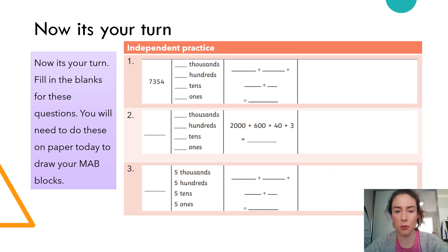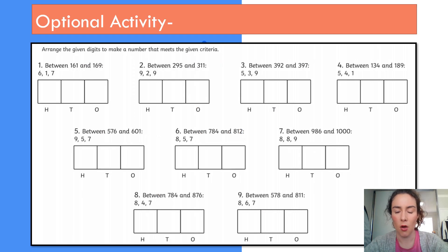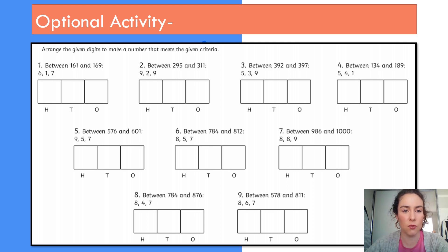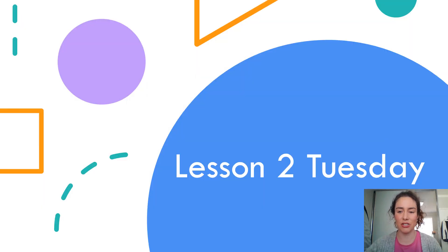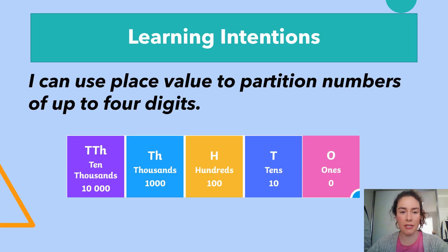For the next questions, fill in the blanks and please make sure you draw your MAB blocks — that's a really important step. This is our optional challenge activity today: arrange the given digits to make a number that meets the given criteria. Arrange the digits six, one and seven to make a number that falls between 161 and 169 using those digits. Good luck with this as your optional activity.